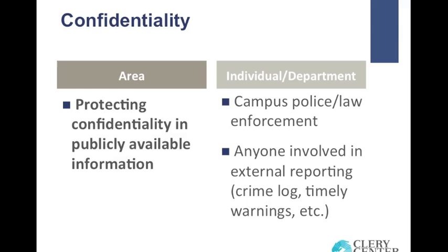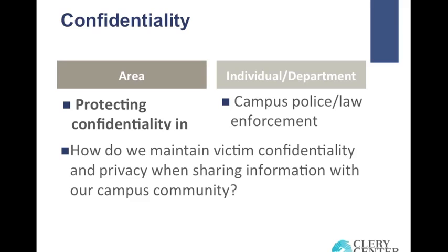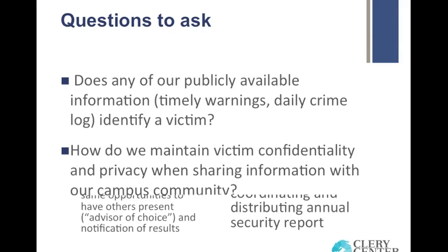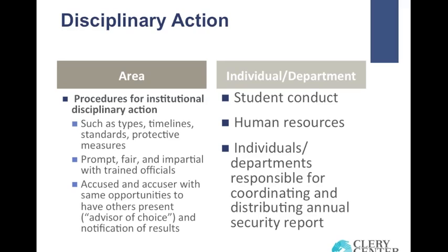Institutions must include information about how the institution will protect the confidentiality of victims and other necessary parties in publicly available record keeping. That includes things like timely warnings, your daily crime log, and your statistics. You'll also want to include information on how you maintain confidentiality when providing accommodations. There shouldn't be personally identifiable information included in these areas, but you'll want to make sure you're concretely including that within your policies. Ask: do any current areas identify a victim, and what are your processes for making sure that information remains confidential?